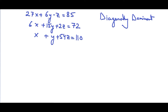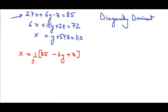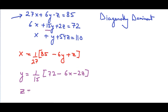Now we rewrite each equation solved for one variable. From the first equation: x = (1/27)(85 − 6y + z). From the second equation: y = (1/15)(72 − 6x − 2z). From the third equation: z = (1/54)(110 − x − y). Writing these three iterative equations earns you marks up to this point in the question.